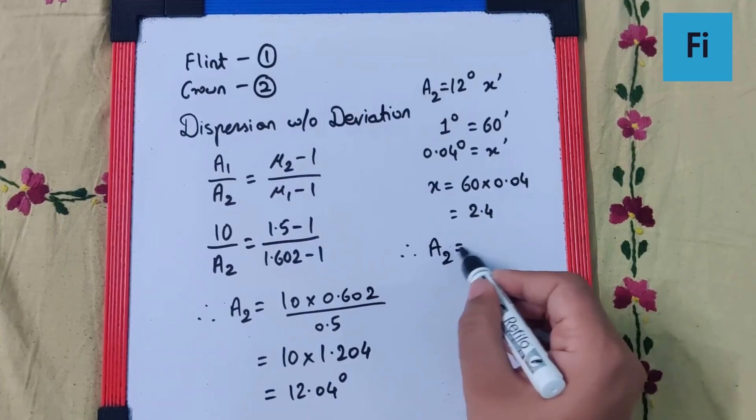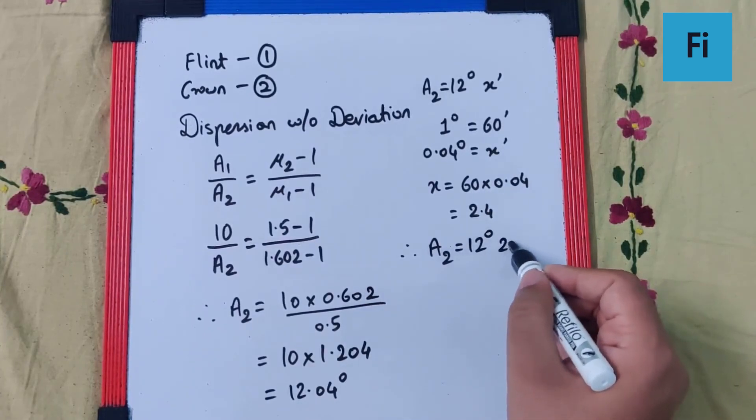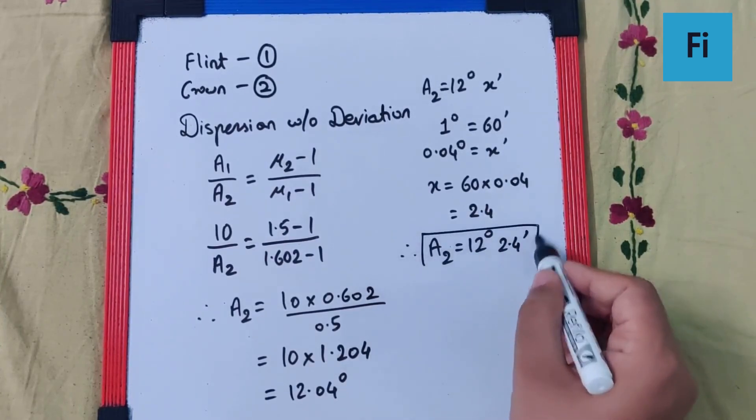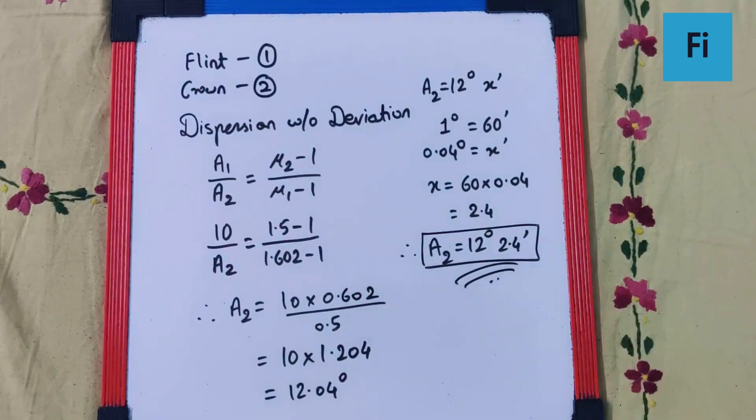So the value of a2 will be 12 degrees 2.4 minutes as our final answer.